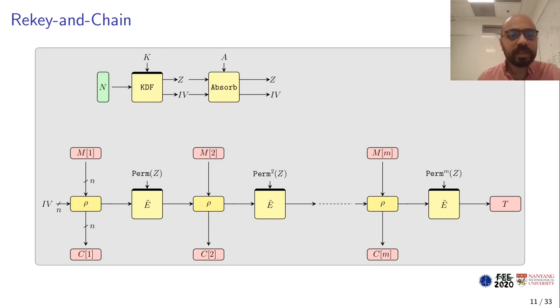So this is the rekey and chain framework. The idea is that we have an initialization function which takes the nonce, secret key and associated data, then it outputs initial session key and initial vector. Afterwards, the initial vector is used as the first chaining value and it goes through a linear function with a plaintext block to output a ciphertext block and generate the new chaining value. The chaining value is encrypted using a permutation of the initial key, and then this is repeated. After each iteration, we apply a permutation to the key, and it's critical because we need the key to be unique for every block cipher call.